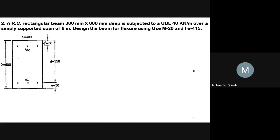Now we go to the second example. A RC rectangular beam 300 mm × 600 mm deep is subjected to a uniformly distributed load of 40 kN/m over a simply supported span of 6 m. We have to design the beam for flexure using M20 concrete and Fe415 steel.